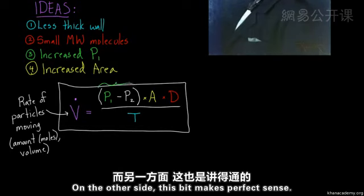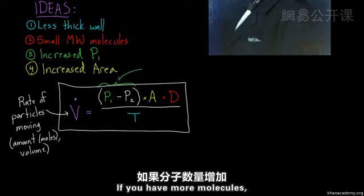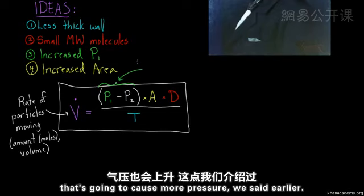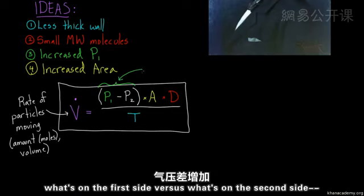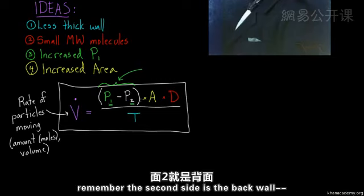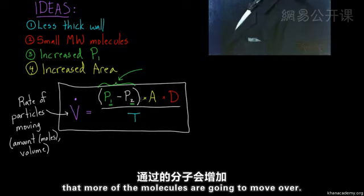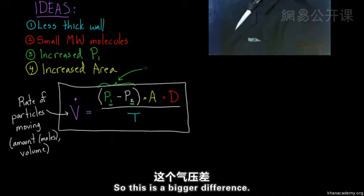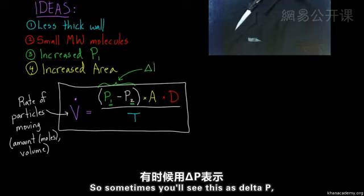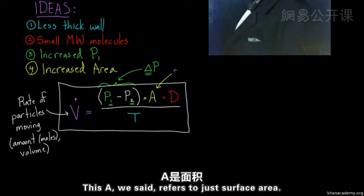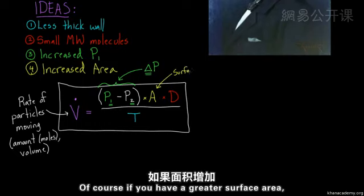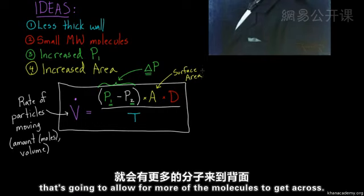On the other side, this bit makes perfect sense, right? If you have more molecules, that's going to cause more pressure, we said earlier. And if there's a bigger pressure difference between what's on the first side versus what's on the second side, remember the second side is the back wall, then of course that's going to mean that more of the molecules are going to move over. So this is a bigger difference. And so sometimes you'll see this as delta P. And delta just means difference. This A refers to surface area. Of course, if you have a greater surface area, that's going to allow for more of the molecules to get across.